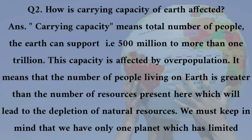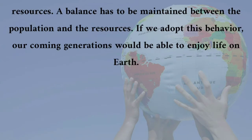Question 2. How is the carrying capacity of Earth affected? Answer. Carrying capacity means the total number of people the Earth can support, i.e. 500 million to more than 1 trillion. This capacity is affected by overpopulation, meaning the number of people living on Earth is greater than the number of resources present here, which will lead to the depletion of natural resources. We must keep in mind that we only have one planet with limited resources, and a balance has to be maintained between the population and the resources.